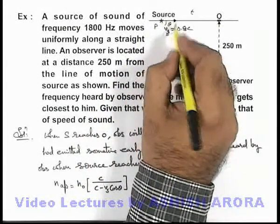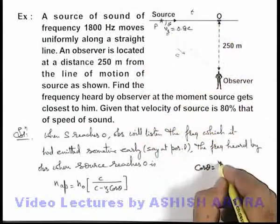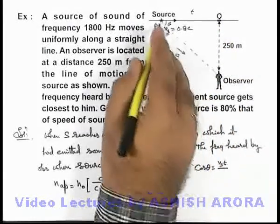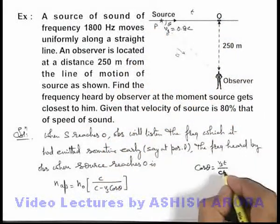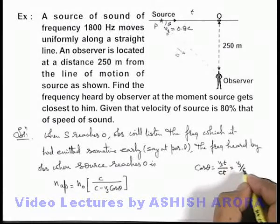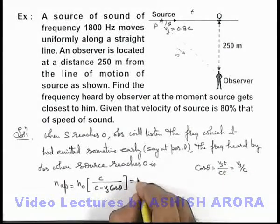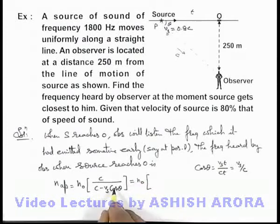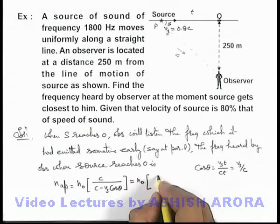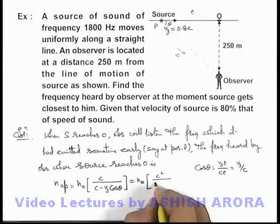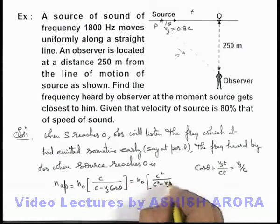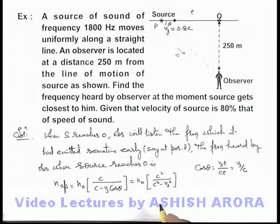As the source is traveling at its speed v_s, this distance will be v_s times t, divided by this distance which will be c times t. This can be written as v_s by c. If we substitute it here, the result will be n_0... we substitute cos theta as v_s by c, it will be n_0 times c squared by c squared minus v_s squared. This is the frequency which is heard by the observer.